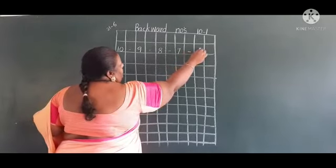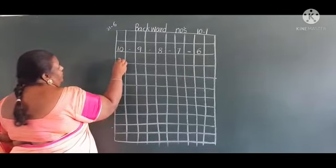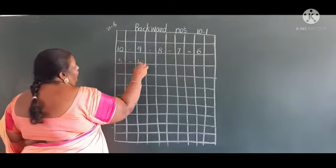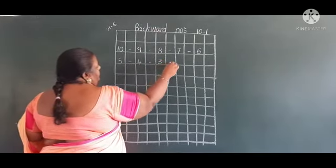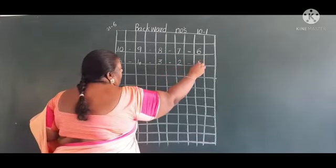7 before 6, 6 before 5, 5 before 4, 4 before 3, 3 before 2, 2 before 1.